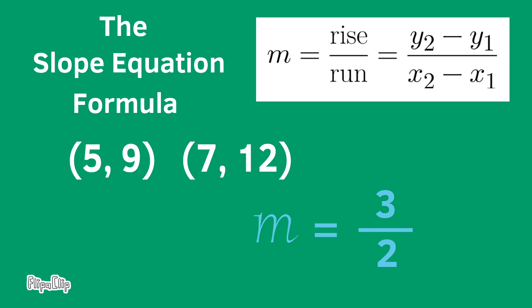The slope is rise over run. 3 represents the rise, or the vertical distance between the two points, and 2 represents the run, the horizontal distance between the two points.